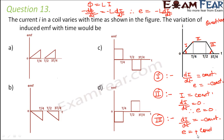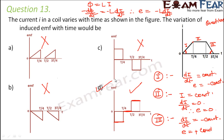Looking at the options: option A's first half is increasing — incorrect, we need constant. Option B's first half is also changing — incorrect. Option C's first half is constant but positive — incorrect, we need negative constant. Option D has the first half as negative constant, second part as zero, and third part as positive constant. So option D is correct.